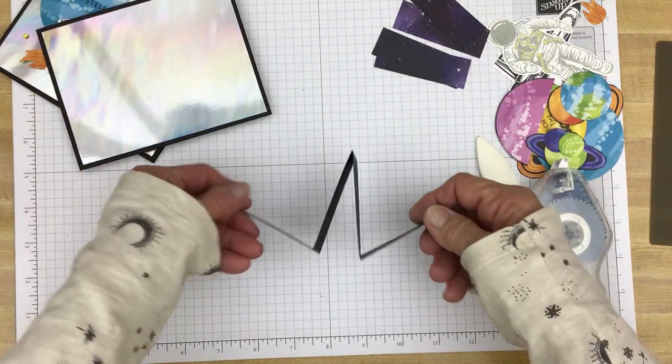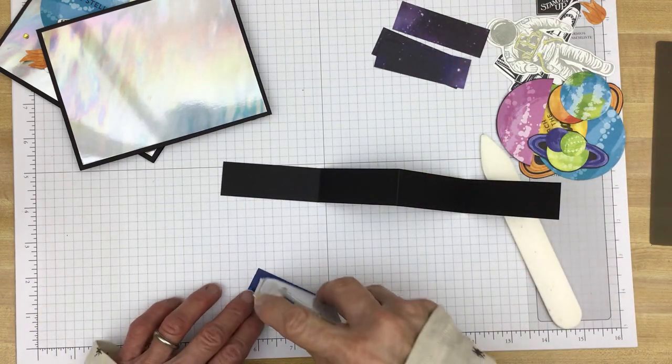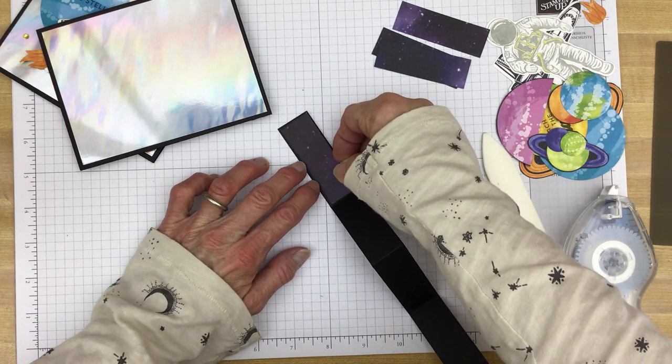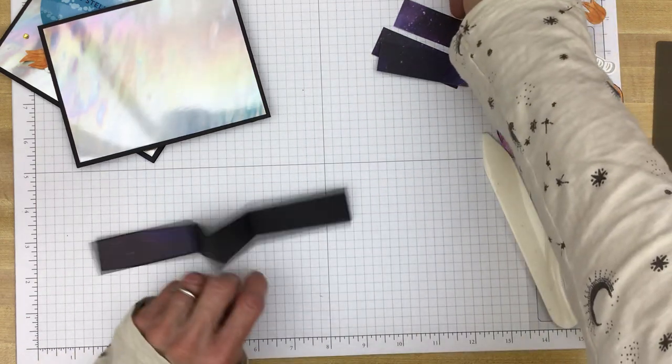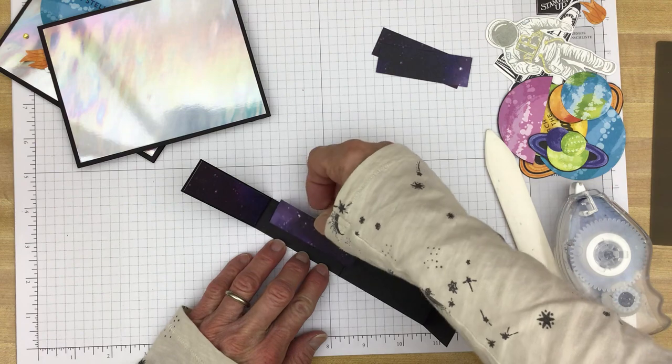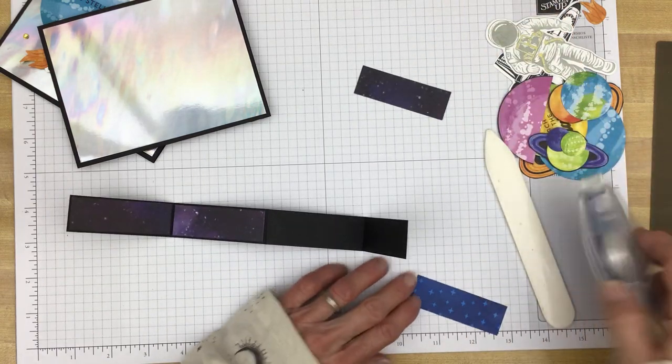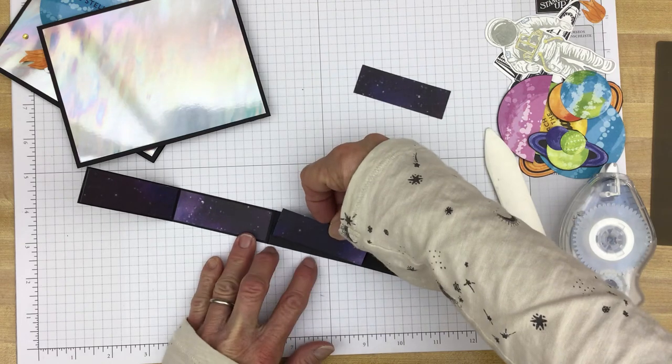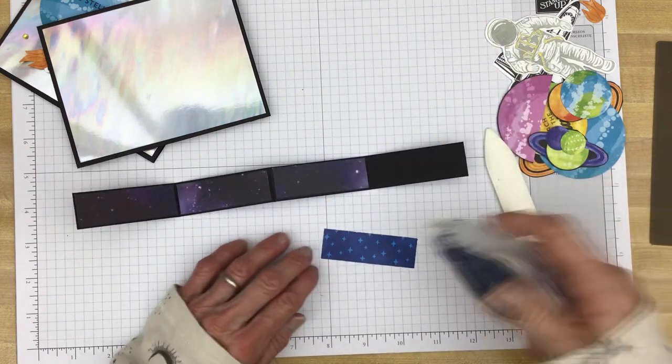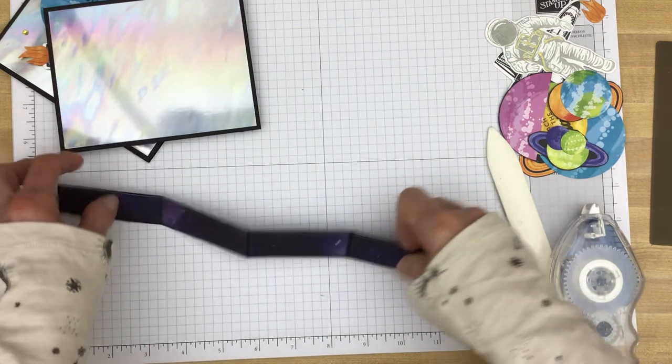So now we're going to take our strip. Remember, we want it to be like a W. So we're going to put these on. And these are 3/4 by 2 and a half. Just kind of line them all up. There we go. Now, you can make a decision here.